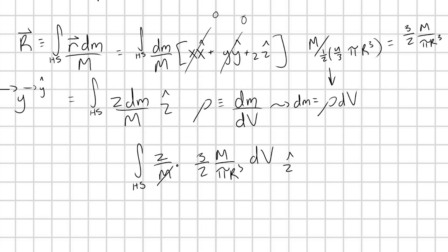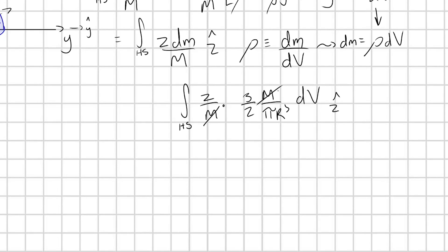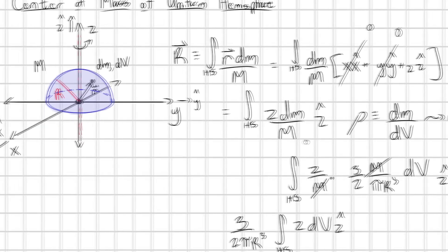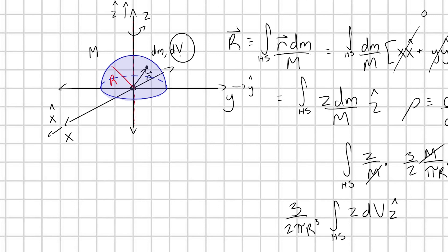Let's cancel our constants and pull the remaining constants outside of the integral. We get (3 / 2π r³) times the integral over my hemisphere of z dv in the z-hat direction — a volume integral. What coordinate system should we use to express dv? We're going to use spherical coordinates, because this is a hemisphere and spherical coordinates will easily allow us to define the boundaries.